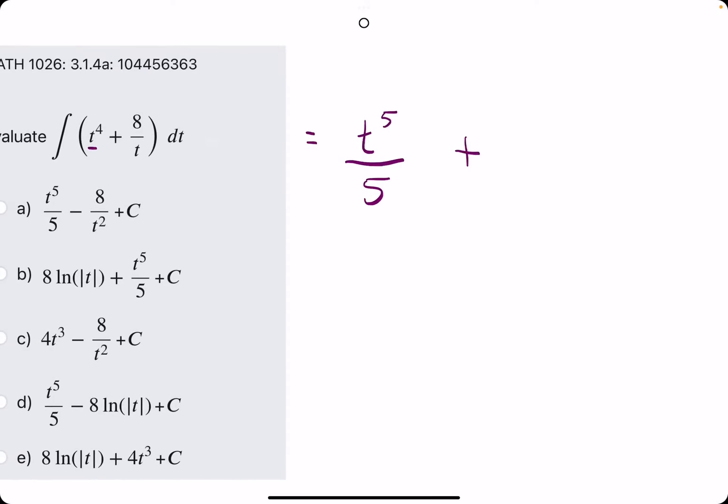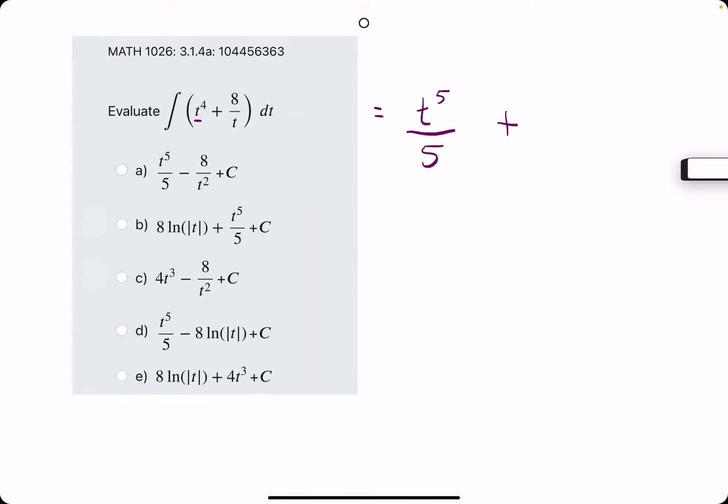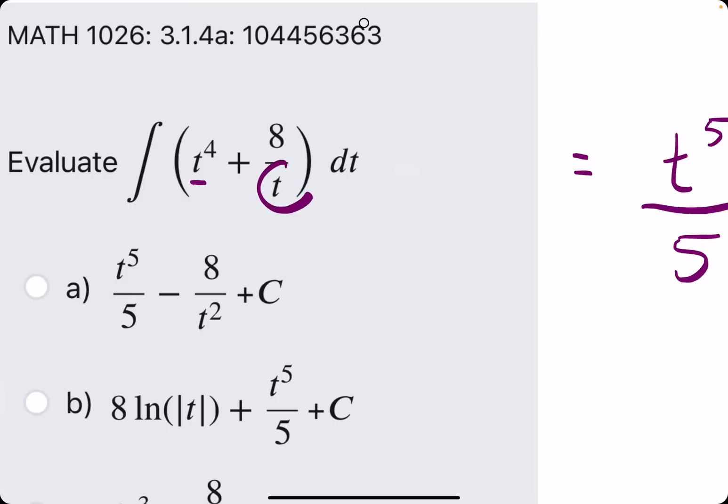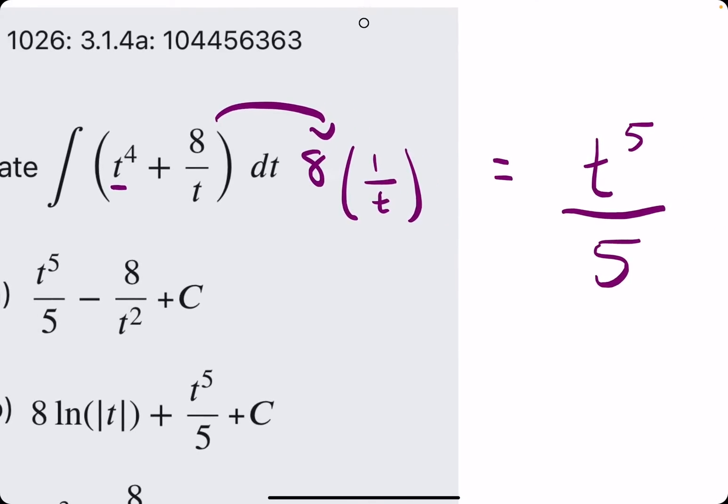Now, moving on to the plus 8 over t. We saw in a previous problem that when we had just a t to the first power in the denominator, 8 over t is just like having 8 times 1 over t.